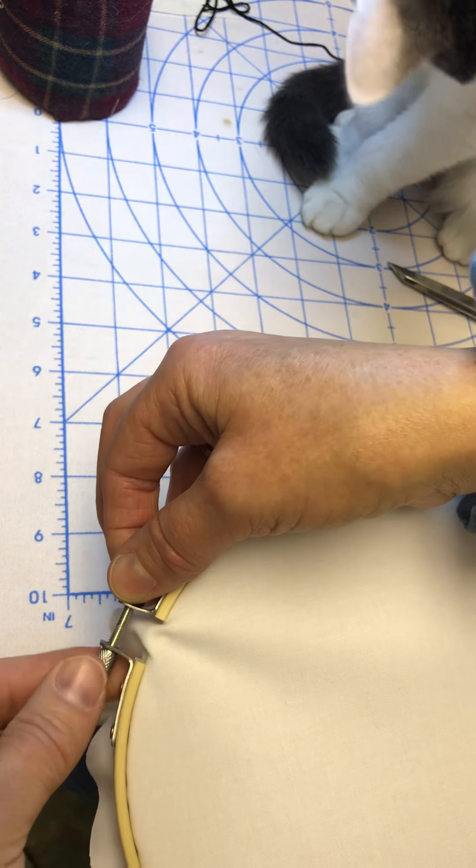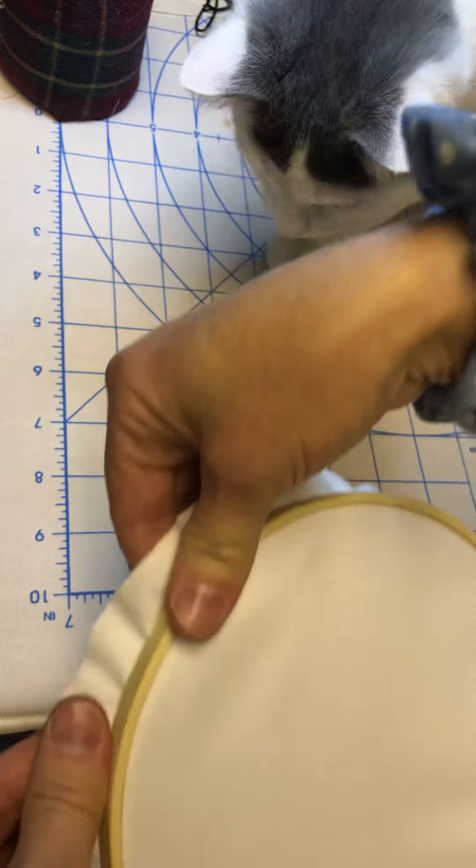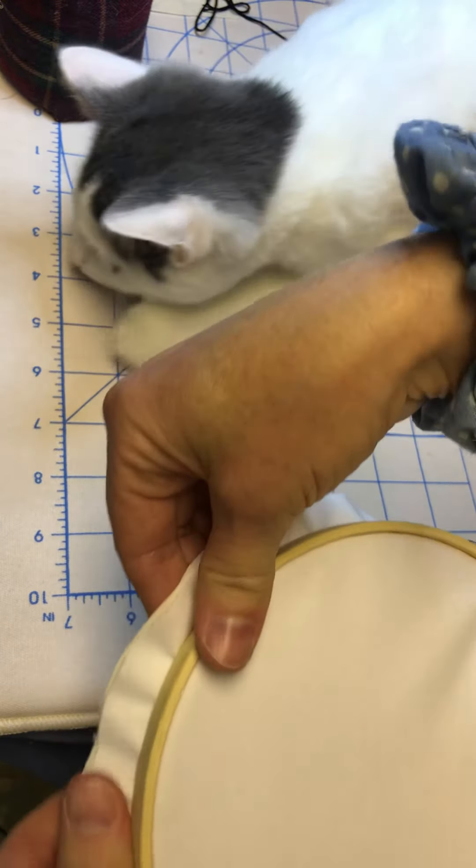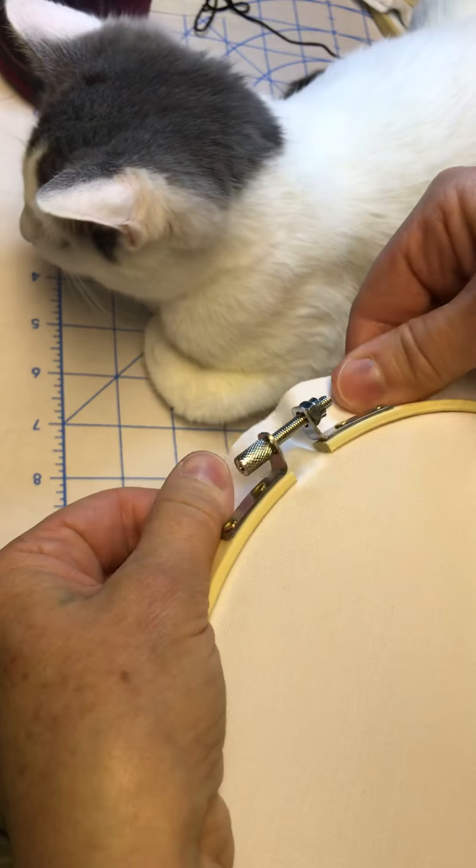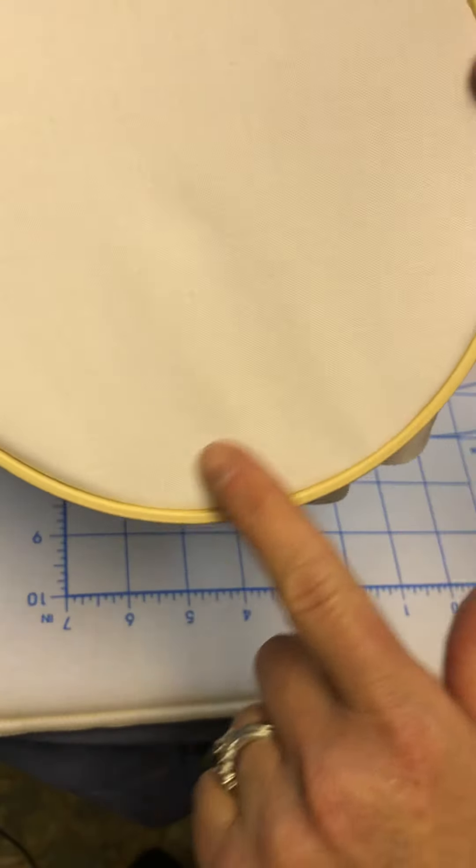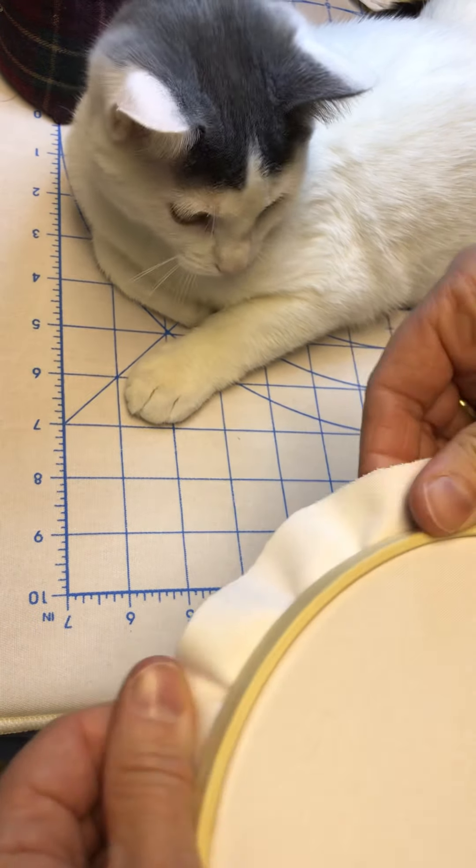And then we're going to tighten it down. This one you have to hold as you saw the nut go flying off. It's not fixed to the hoop. So we're going to tighten that down and then go around your fabric in the hoop and pull it nice and tight. You're going to want to see these little wiggles here. You don't want that. You want to have it nice and tight like a drum.